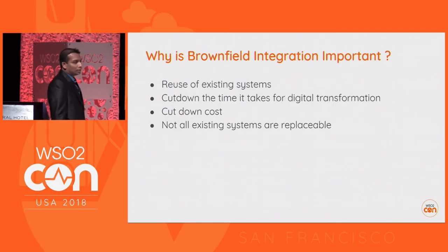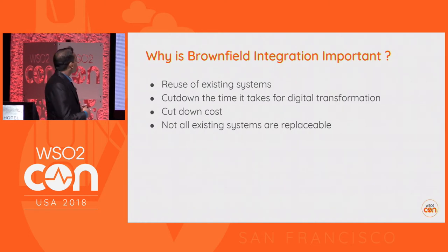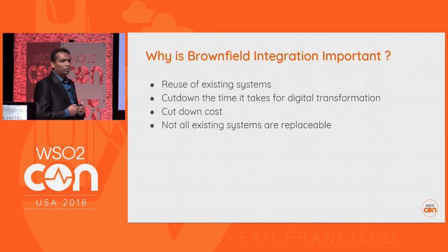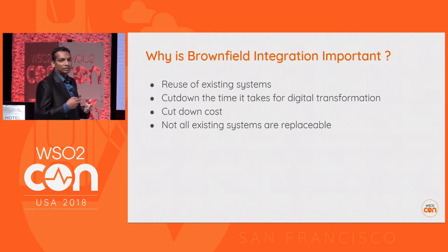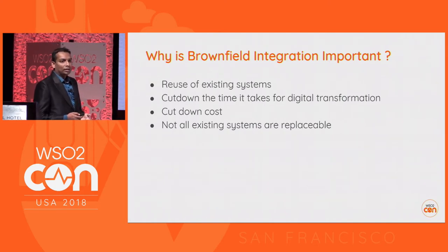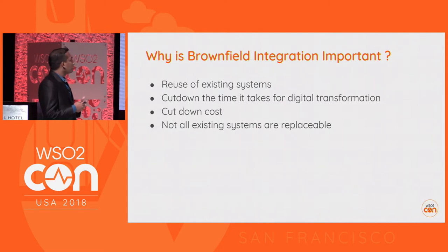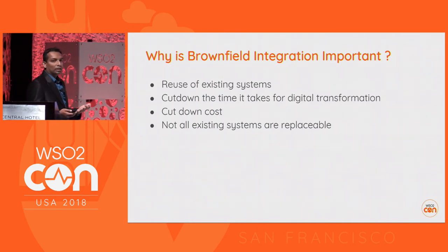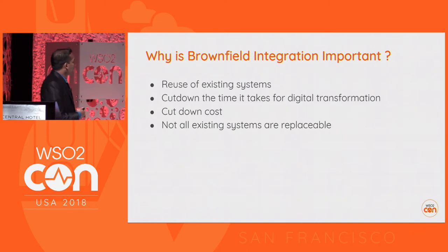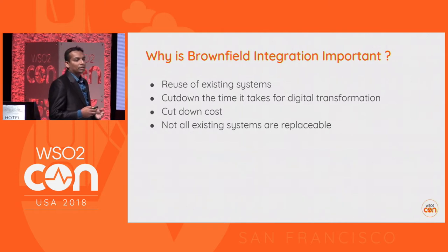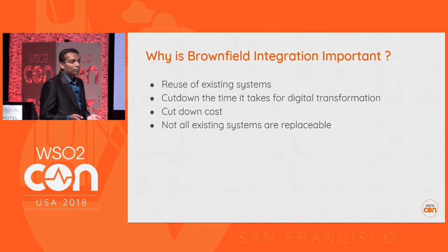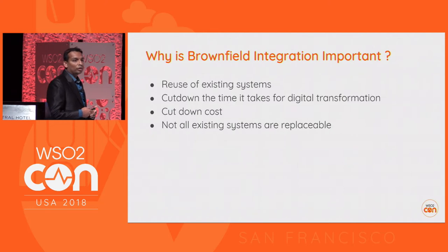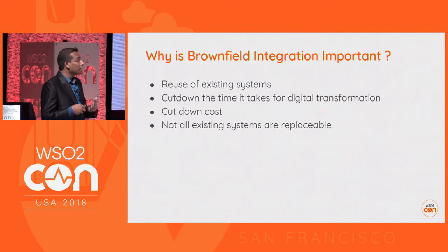Let's see why brownfield integration is so important. Most modern systems are capable of integrating with other systems through APIs, but in an organization it's hard to expect all systems to be like that. There are legacy systems which cannot provide such integration capabilities. Those systems will get replaced over time, but to do digital transformation, nobody wants to wait until that happens.